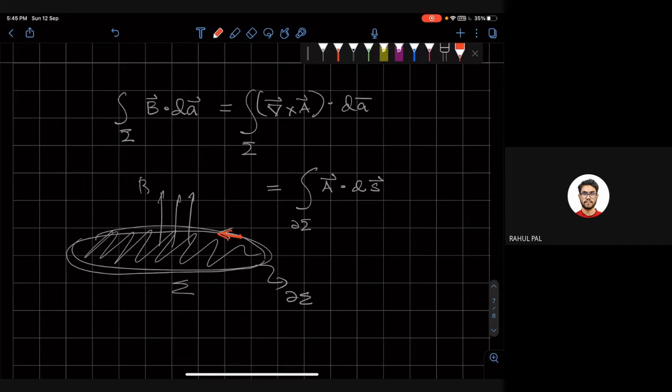The flux through the surface is related to the gauge potential on the boundary. If you know what the gauge potential is on the boundary of this disk, you can tell what the flux is inside.